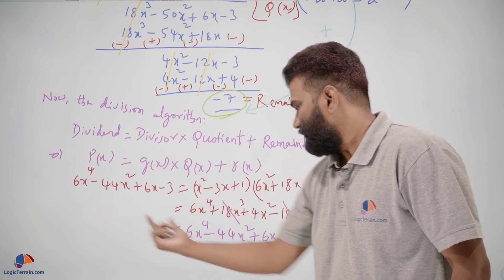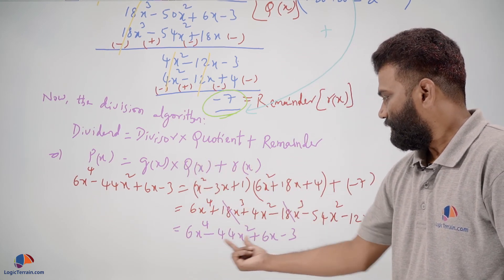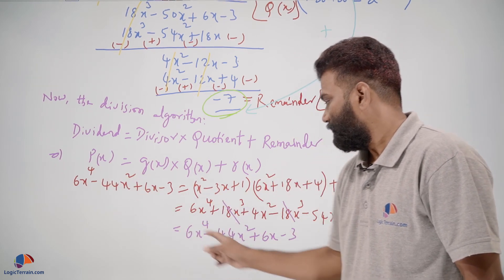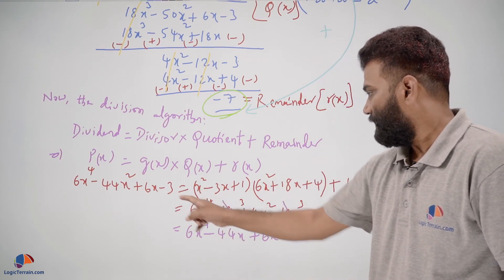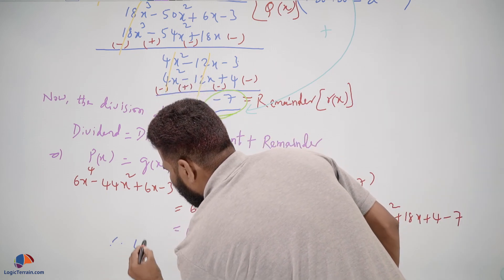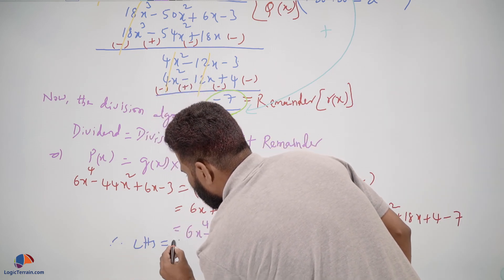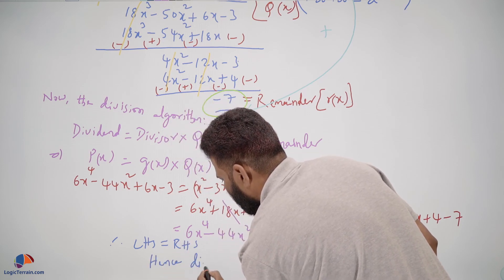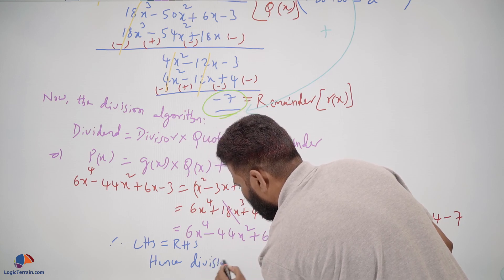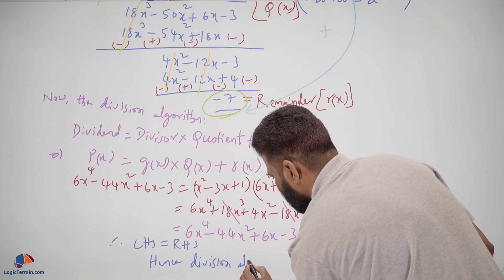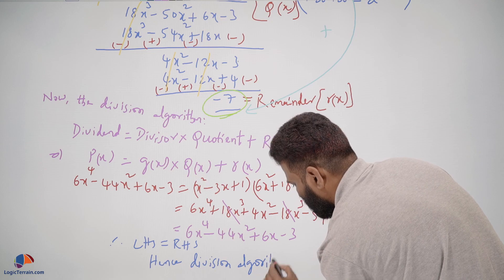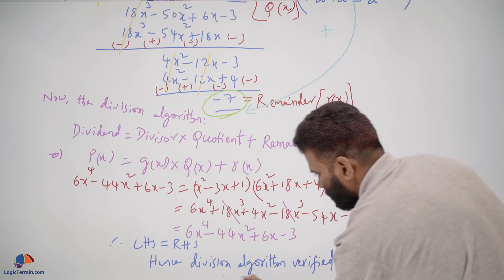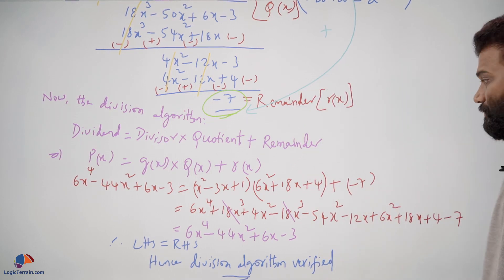This equals 6x to the power of 4 minus 44x square plus 6x minus 3, which matches the dividend. Therefore, dividend equals divisor into quotient plus remainder. Hence the division algorithm is verified.